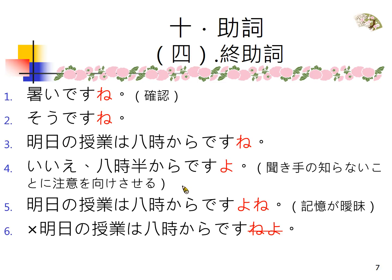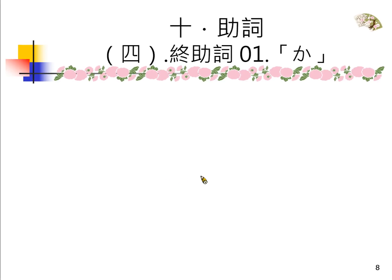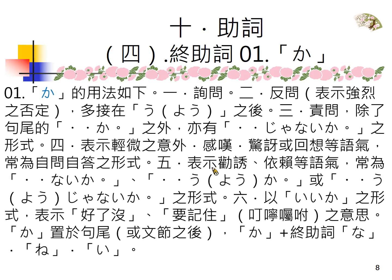等一下我们会再提出来，因为よ跟ね这个终助词——我们上一次介绍的终助词——是可以重叠使用的。遇到的时候我们再稍微做说明。か的用法，除了表询问以外，另外有反问、责问等等的意思。